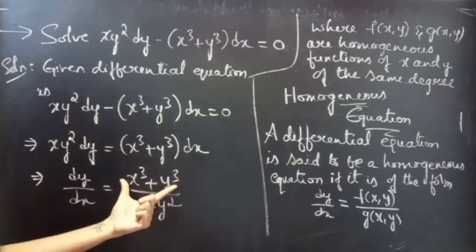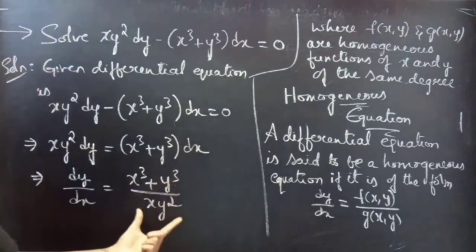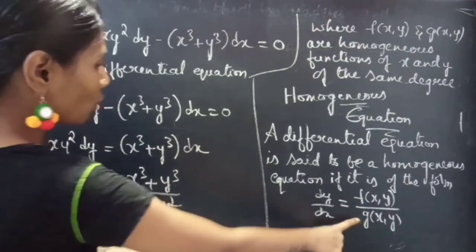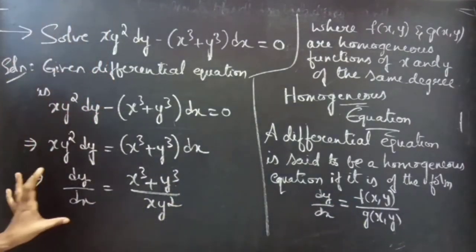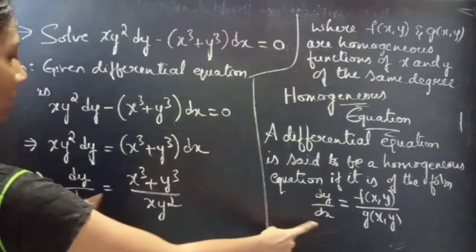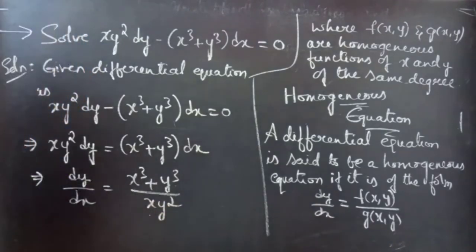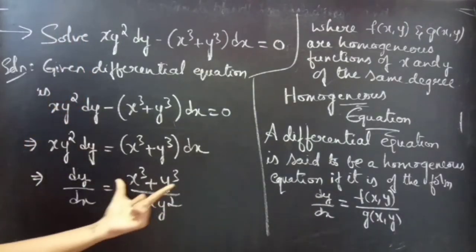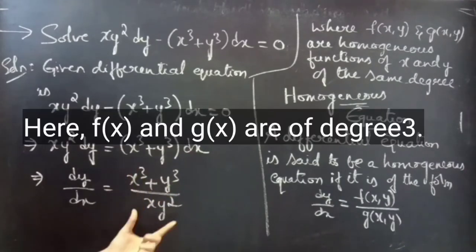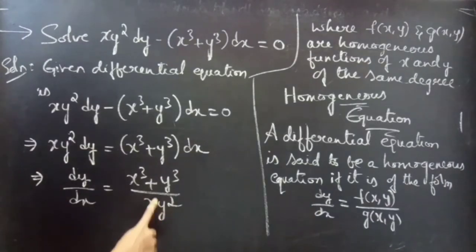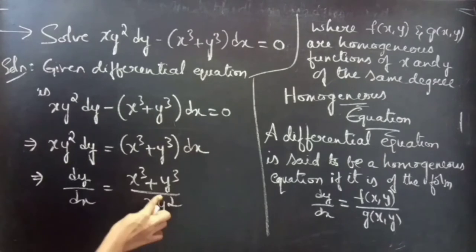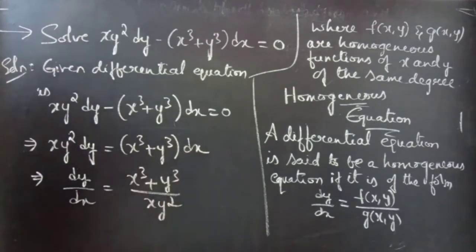This is of the form dy/dx = f(x, y) / g(x, y). Here the numerator is a function of degree 3 and the denominator is also a function of degree 3, since x¹ · y² gives degree 1+2=3.